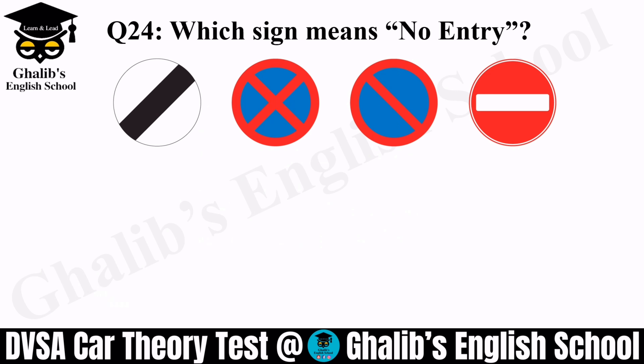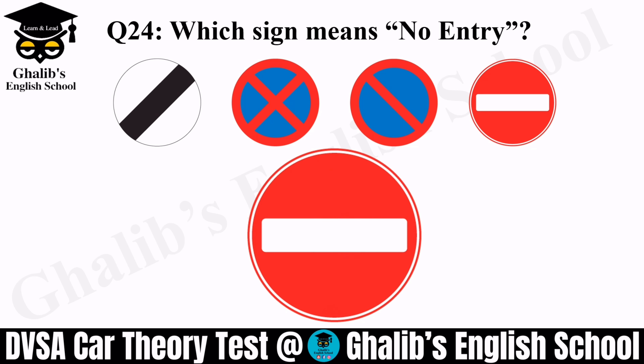Question 24. Which sign means no entry? Sign 1 is national speed limit, sign 2 is no stopping, sign 3 is waiting restriction, and sign 4 is no entry. No entry is sign number 4.